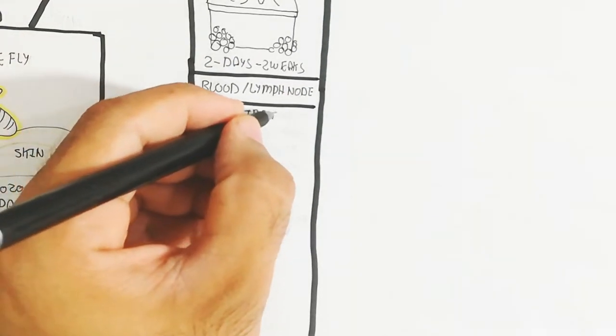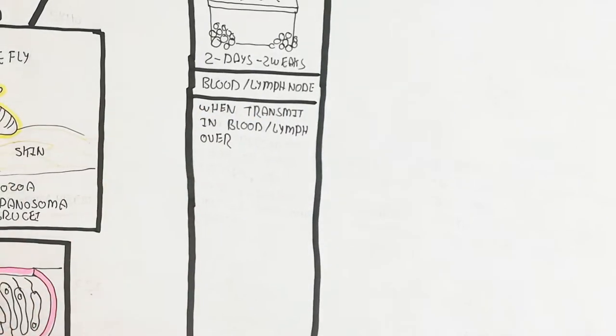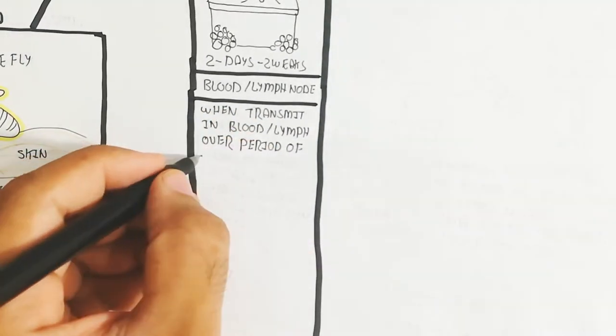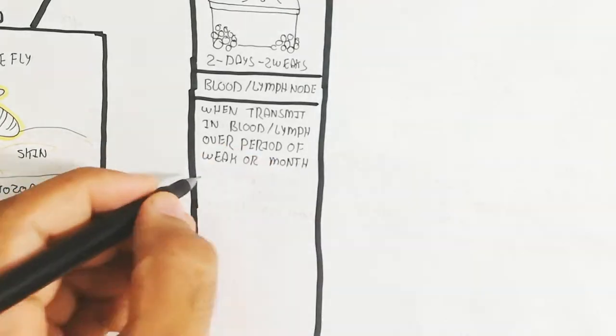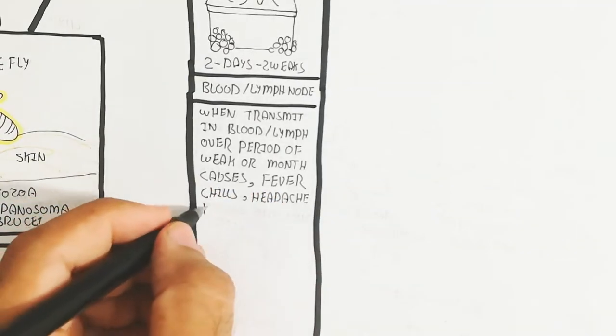When transmitted to blood and lymph over a period of weeks or months, it causes fever, chills, headache, muscle and joint pain, as well as swelling of the face.